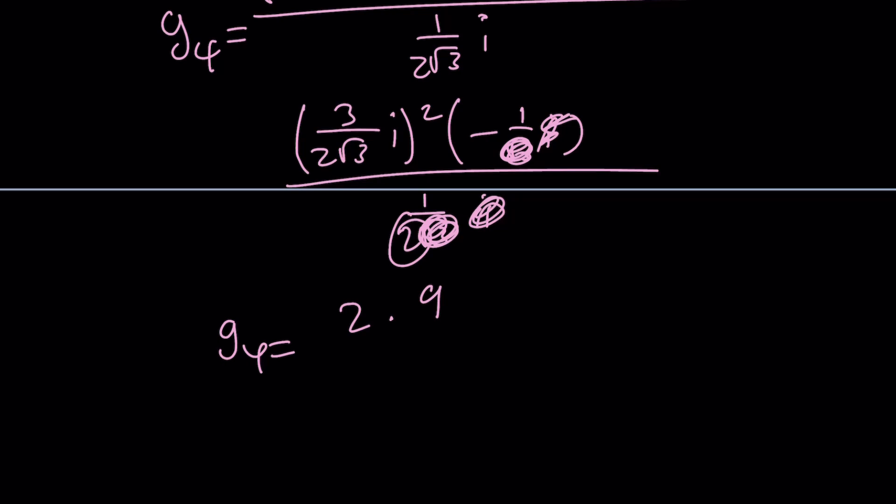So, g sub 4 is going to be 2 times 9. i squared is just going to give us negative 1, divided by 12. And then we have a negative 1 here. If you go ahead and simplify this, like negative times negative is positive. 9 and 12 have a common factor. Actually, this is 18 over 12. And that would be 3 over 2. That would be one of the solutions.